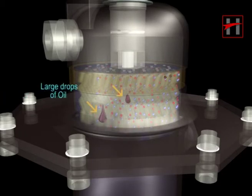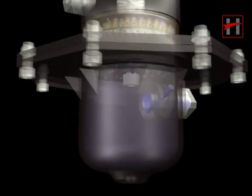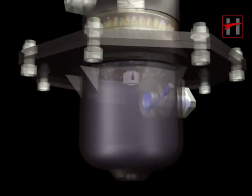These form larger drops of oil and water which fall into the collecting chamber.